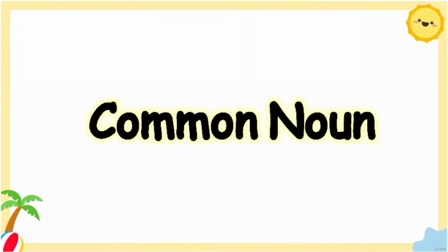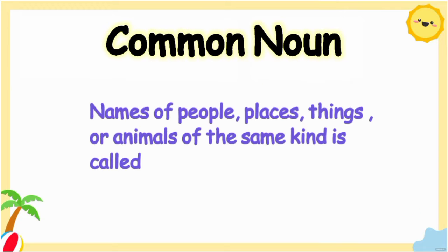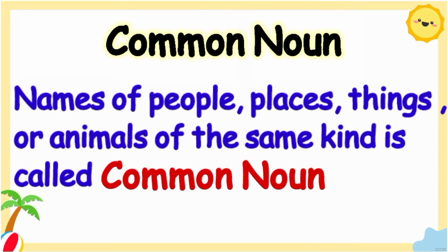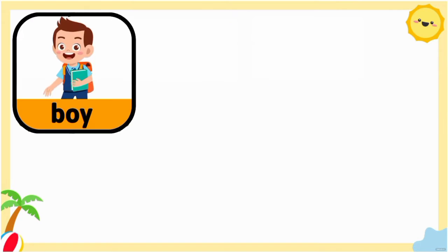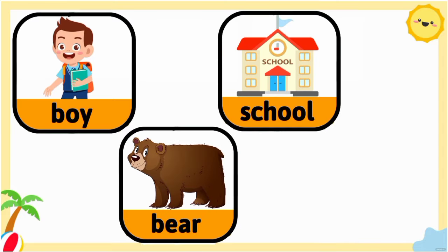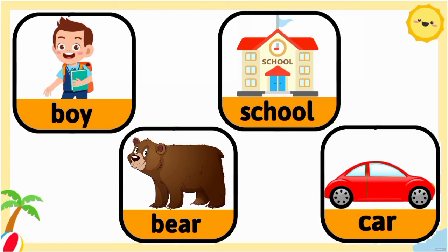Now let's learn about common nouns. Any name of people, places, things, or animals of the same kind are called common nouns. Here, we are not talking about a specific name — we are talking about the name that is common to them. For example: boy, school, bear, or car. These are all examples of common nouns.